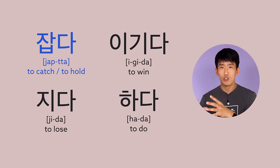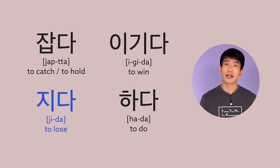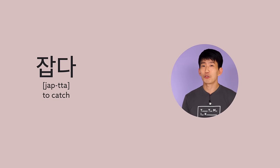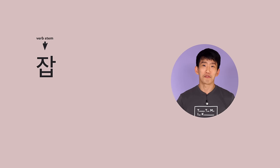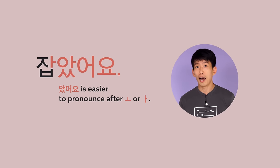Let's look at some examples using four verbs: 잡다 (to catch or to hold), 이기다 (to win in a competition or a fight), 지다 (to lose), and 하다 (to do). The goal is not to memorize all the words and sentences but to understand how the conjugation works. For 잡다, remove 다 and you have the verb stem 잡. The last vowel is 아, so it's followed by 았어요, giving you 잡았어요.